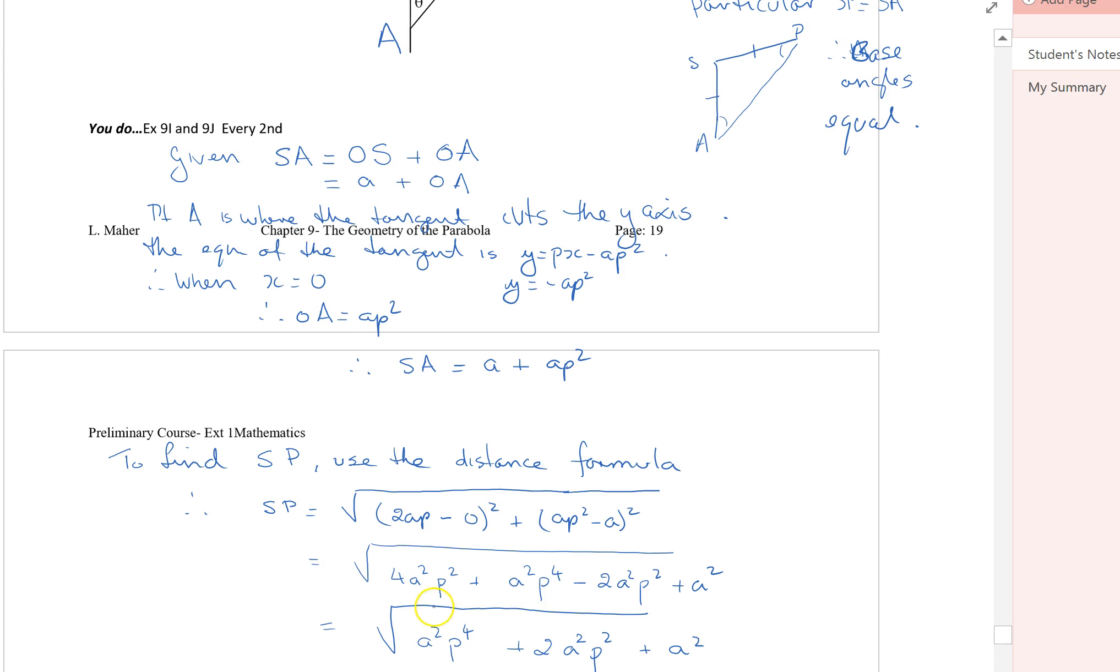So collecting together your like terms and putting this term to the front, A squared P to the fourth plus two of these, and plus A squared.